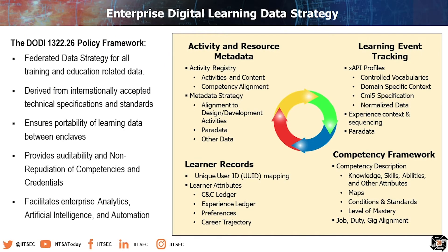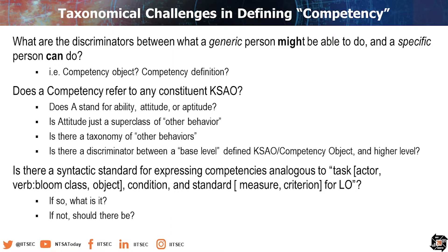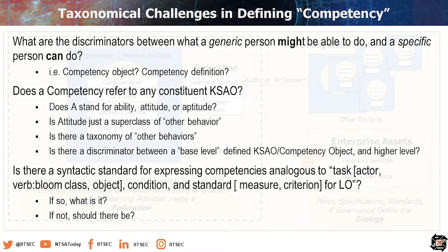The idea here is that we wanted to not over-normalize the kind of information that represents a learning event. What are the discriminators between what a generic person might be able to do and a specific person can do? We call this a competency object, a competency definition.